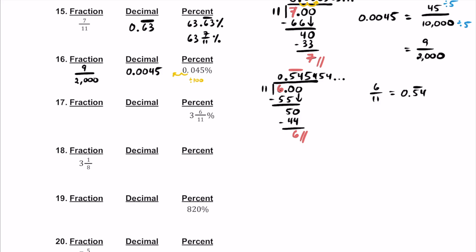If that's true, then we can write this as 3.54 repeater percent. Now at this point, we can turn this into a decimal by dividing by 100 — slide the decimal over twice to the left. If that's true, we're going to write 0.0354 — with just the 5 and 4 repeating. Make sure we keep that bar.